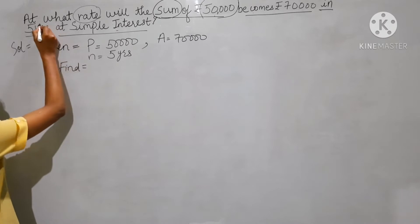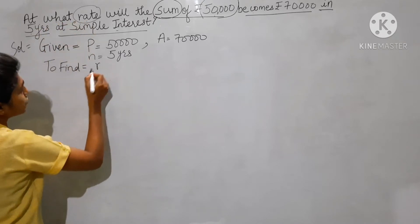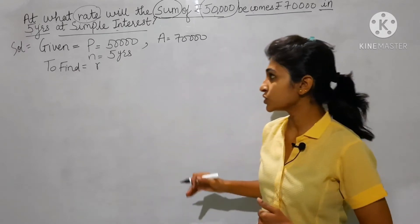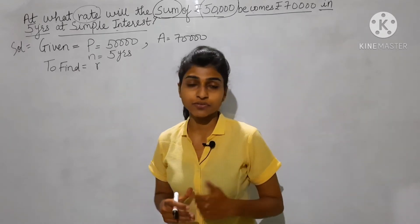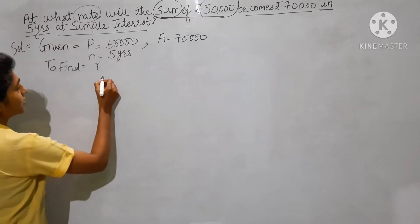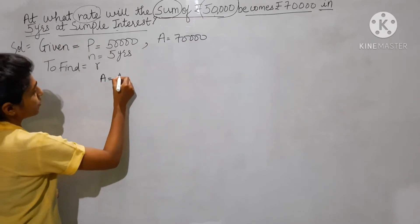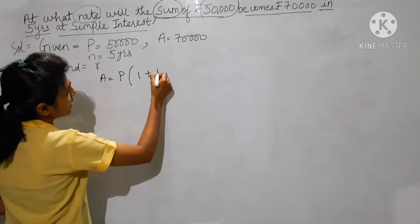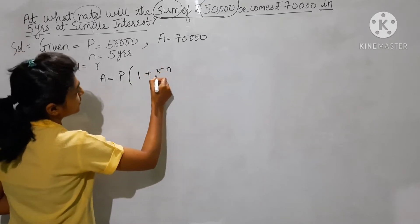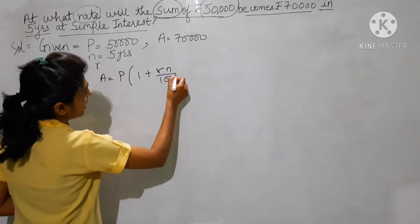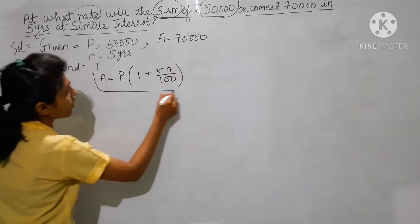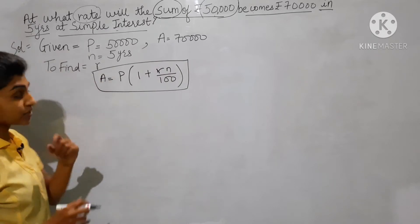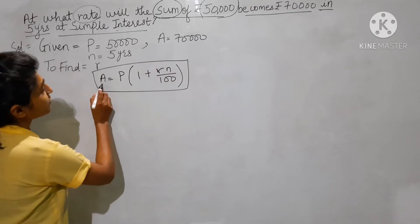To find: at what rate means we have to find r. So we will find r by using the amount formula — the second formula — that is A is equals to P bracket 1 plus r×n divided by 100. By using this formula we are going to find the rate of interest.